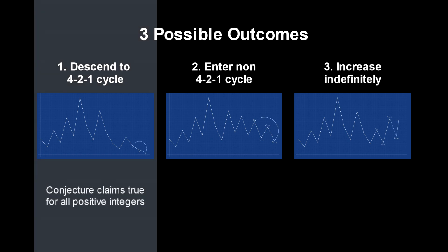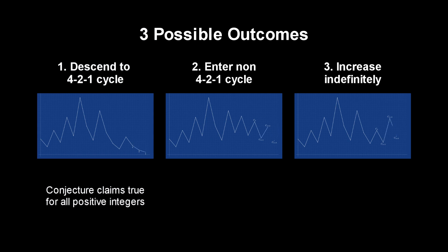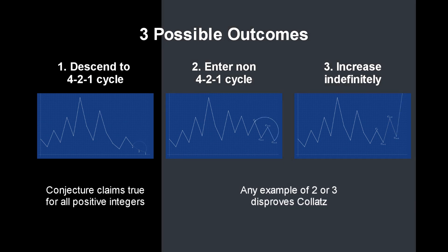The first outcome is what the conjecture claims to occur for all positive integers. However, if an example of either the second or third outcome were to be discovered, it would disprove the Collatz conjecture.